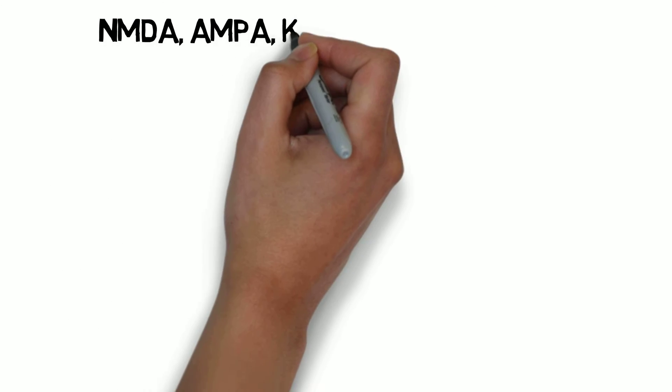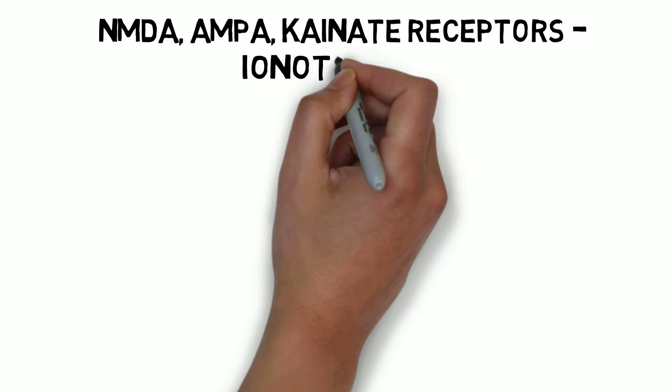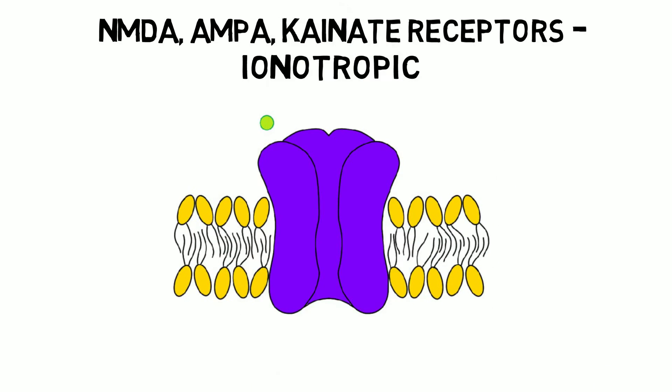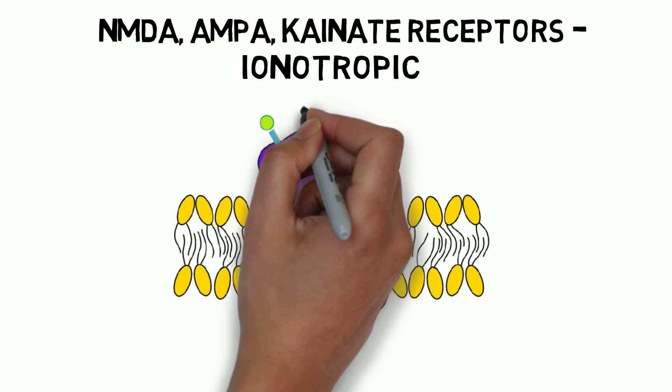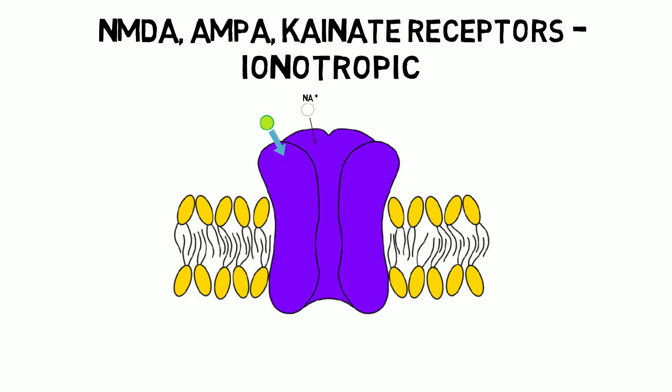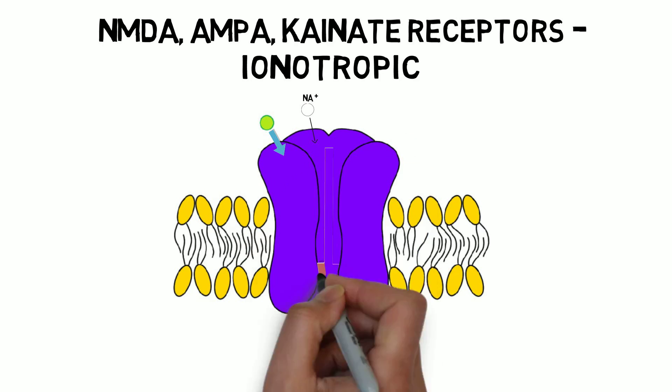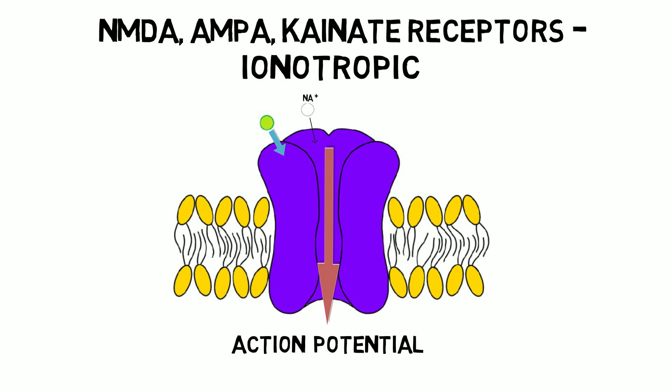Glutamate interacts with several different types of receptors. There are three identified ionotropic glutamate receptors, named for substances that activate them: NMDA, AMPA, and kainate receptors. When activated, all three allow positively charged sodium ions to flow into a postsynaptic neuron, depolarizing the neuron and making it more likely to fire an action potential.